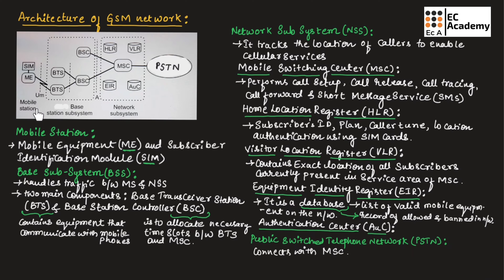The GSM consists of three major subsystems. The first one is mobile station, the second one is base station subsystem, and the third one is network subsystem. These systems interact with each other and with the user through network interfaces to establish communication.